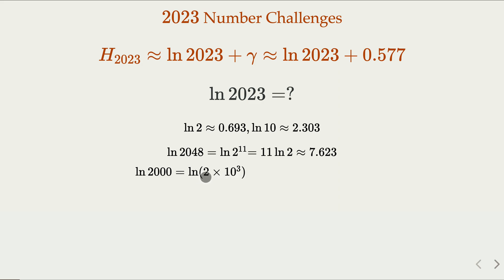By the property of logarithm, that's equal to log 2 plus 3 log 10. Plug in the values that we know. So that's approximately 7.6 again. So we are able to find the lower bound and the upper bound of log 2023.